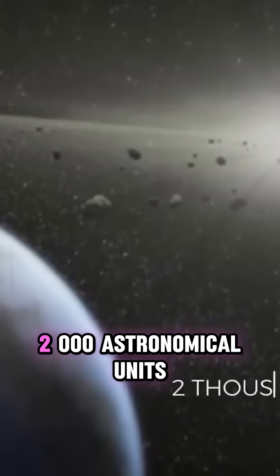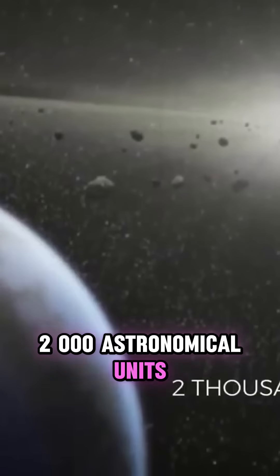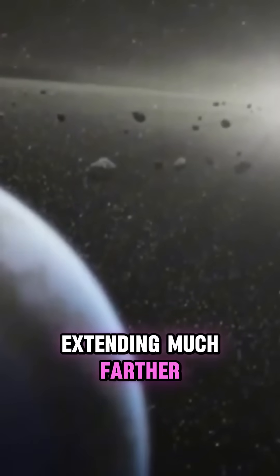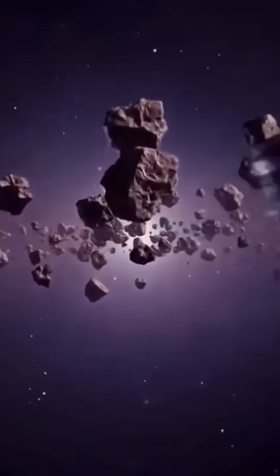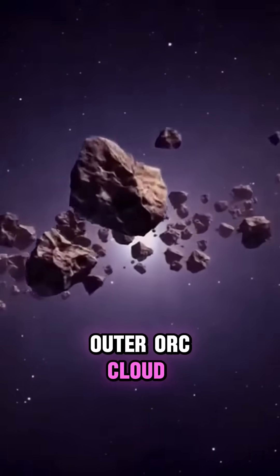The Hills Cloud, starting around 2,000 astronomical units and potentially extending much farther, holds the highest concentration of comets in our solar system, estimated to be at least five times more than the Outer Oort Cloud.